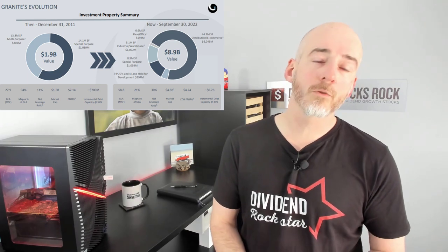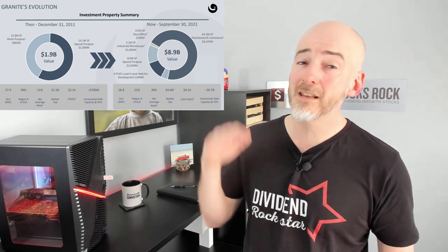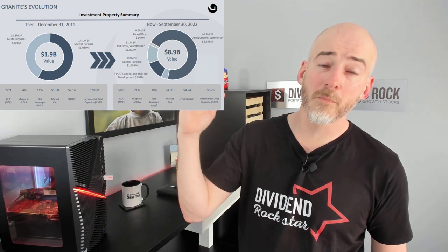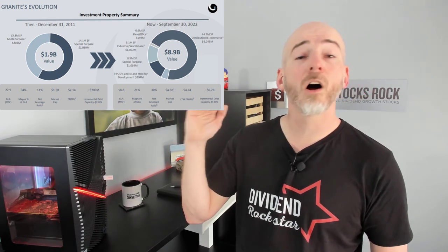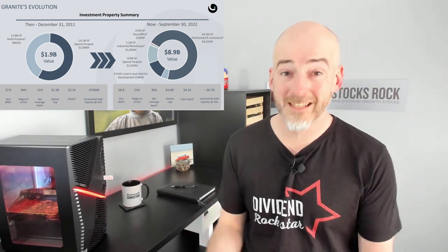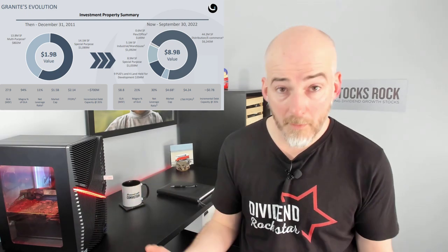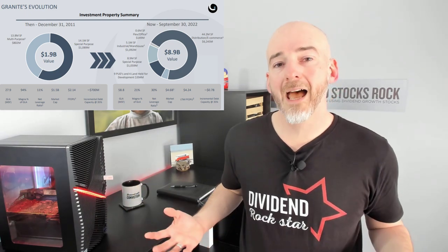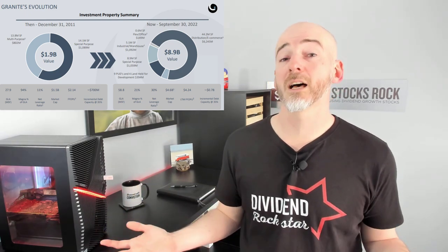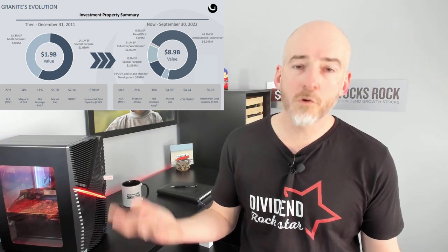There are two red flags to watch. First, the remaining exposure to Magna International — though I'm not too worried because every quarter they decrease that exposure. The second red flag is whether they can maintain a 99% occupancy rate all the time, because if they continue to invest in new development and acquiring more properties, they may end up with oversupply, and those properties cost a lot if they sit empty.